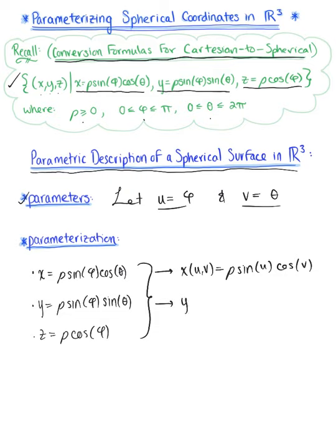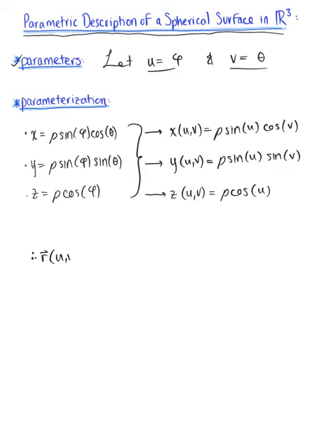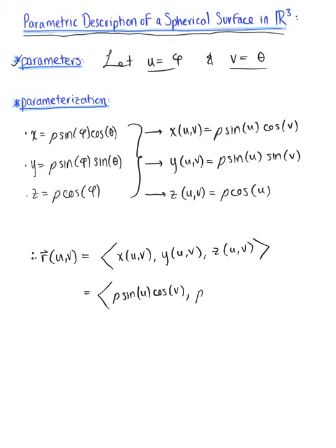The parametric description for y in terms of u and v is defined as rho sine of u sine of v, and z is defined as rho cosine of u. These define the components of our vector-valued function r(u,v). Plugging in what we just found, the first component is rho sine of u cosine of v, the second component is rho sine of u sine of v, and the third component is rho cosine of u.